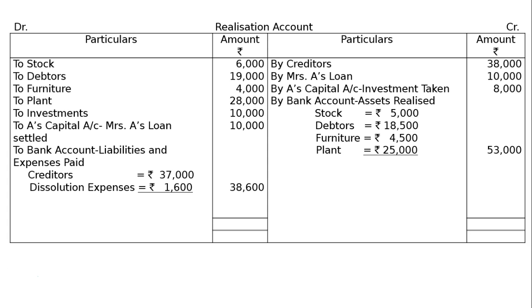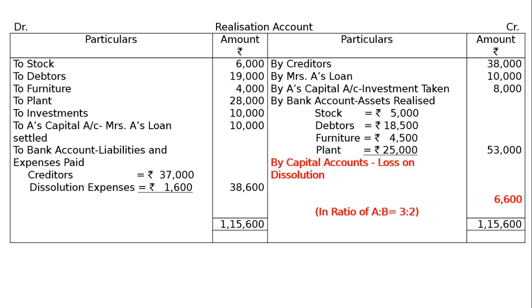In the Realization Account, we will have a Loss. The debit side totals Rs.1,15,600. Find out the gap — that is Rs.6,600 Loss. By Capital Accounts, the loss is distributed in the ratio of 3 to 2: A will get Rs.6,600 × 3/5 = Rs.3,960, and B will get Rs.6,600 × 2/5 = Rs.2,640.